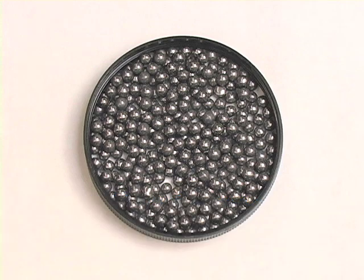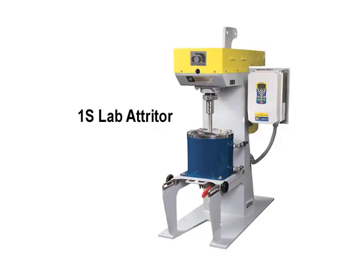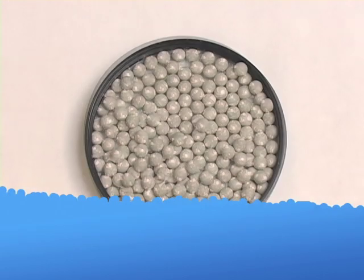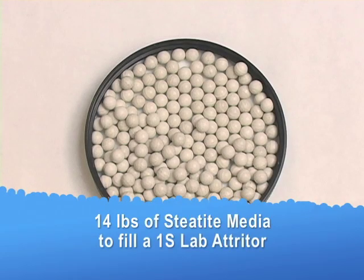For example, if you were filling a Union Process 1S Laboratory Attritor, you'd need 80 pounds of tungsten carbide media, while only requiring 14 pounds of steatite media.